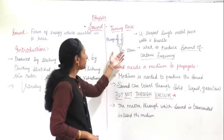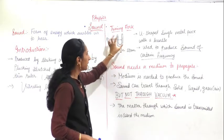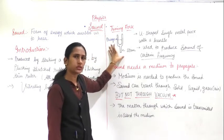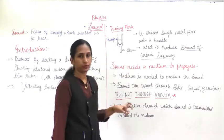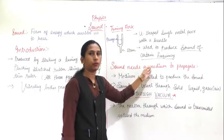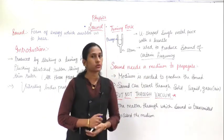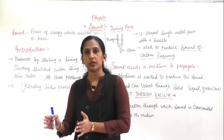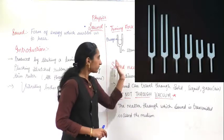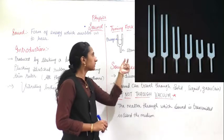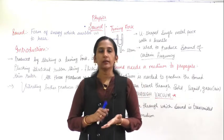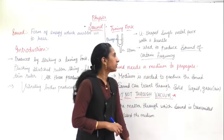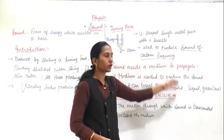Now about the tuning fork: it is a U-shaped single metal piece with a handle. The arms are called prongs and the handle is called the stem. For what purpose is it used? This is important — a question can come about the tuning fork. It is used to produce sound of certain frequencies. Different tuning forks are made for producing different vibrating frequencies. When you hit the tuning fork on a rubber pad, the arms vibrate and produce the desired frequency.